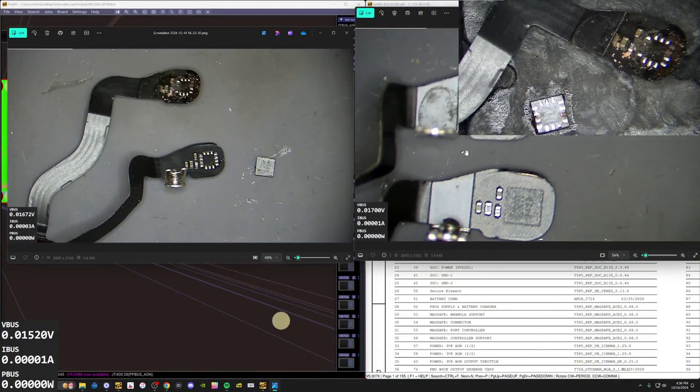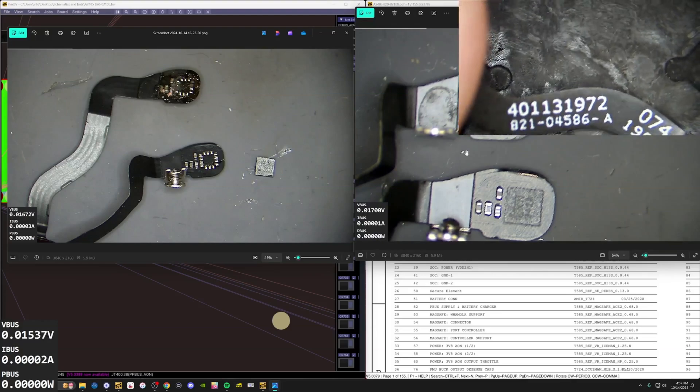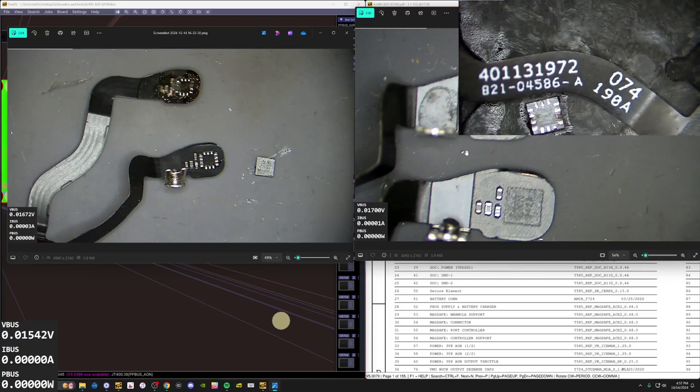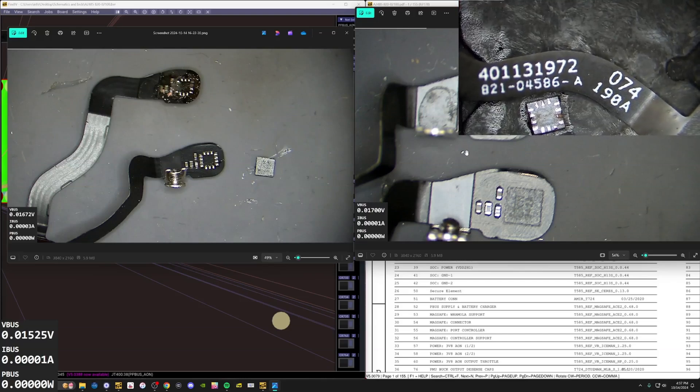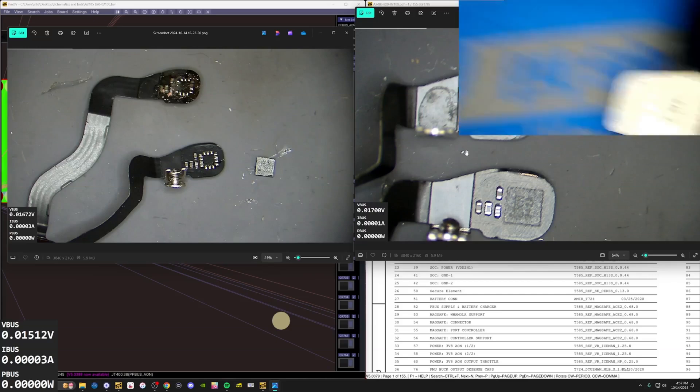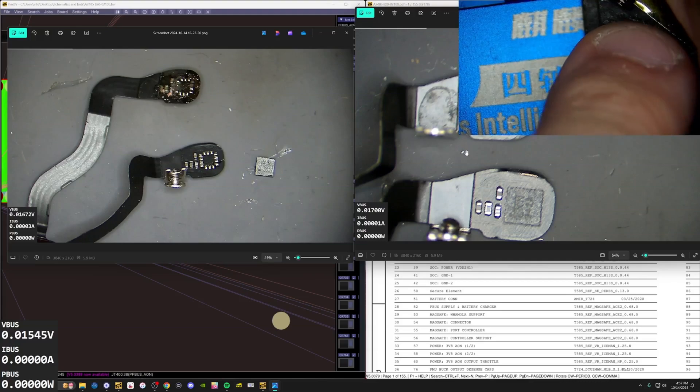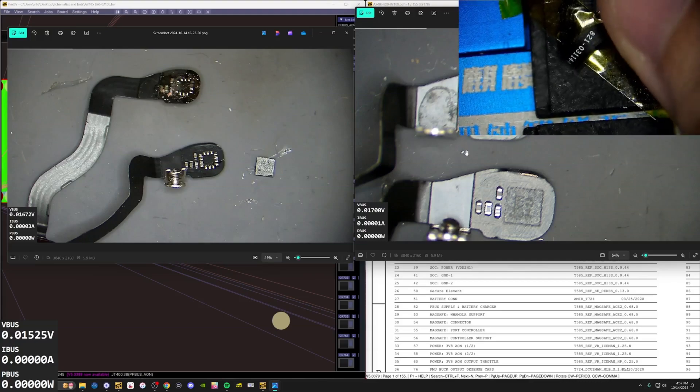We can't really see well here. So here's our this guy, right? So this is our bad flex from this. It's an 821-04586-A and then this is one from an M1 or M2 which is something different basically.